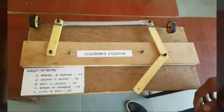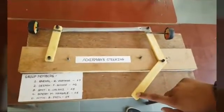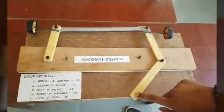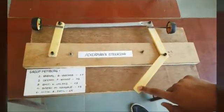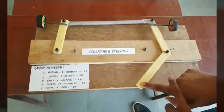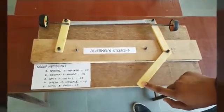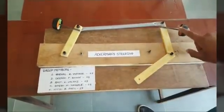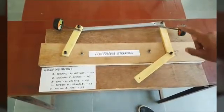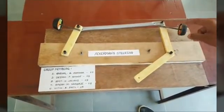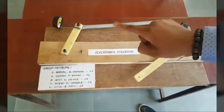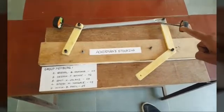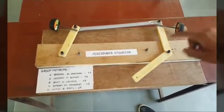As we know, the steering gets connected towards link 1 over here. When we move the steering in the right direction, link 1 moves towards the left direction. The tire turns in the right side direction at the same angle for tire 1 and tire 2, and it gives a right side turn.